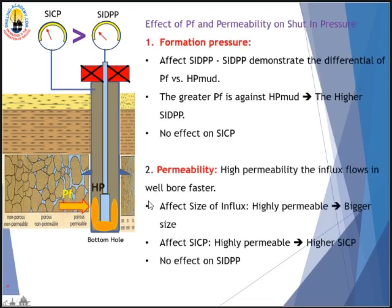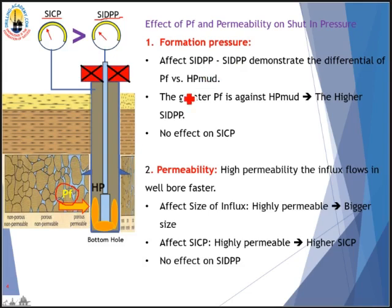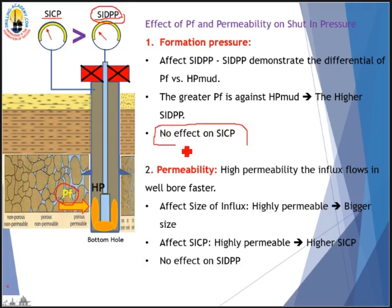Now let's look at the effect of formation pressure and permeability on shut-in pressure. There are two figures: shut-in casing pressure and shut-in drillpipe pressure. Formation pressure affects the shut-in drillpipe pressure (SIDPP). The SIDPP demonstrates the differential pressure of formation pressure versus the hydrostatic pressure of the mud in the wellbore — the greater the formation pressure against hydrostatic pressure, the higher the SIDPP. Formation pressure has no effect on shut-in casing pressure at all.